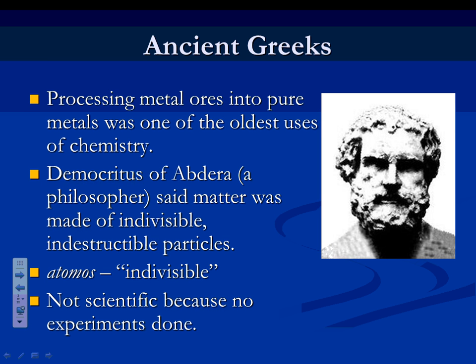A guy named Democritus said that everything's made of atoms. He came up with this idea because: what happens if you cut something in half? You take a piece of paper, cut it in half, then in half again, and again. Eventually, Democritus said you won't be able to cut it in half anymore because you'll be down to the tiniest little piece — you can't cut it in half. That's why he gave it the Greek word 'atomos,' which means indivisible. So everything is made of tiny, indivisible particles.